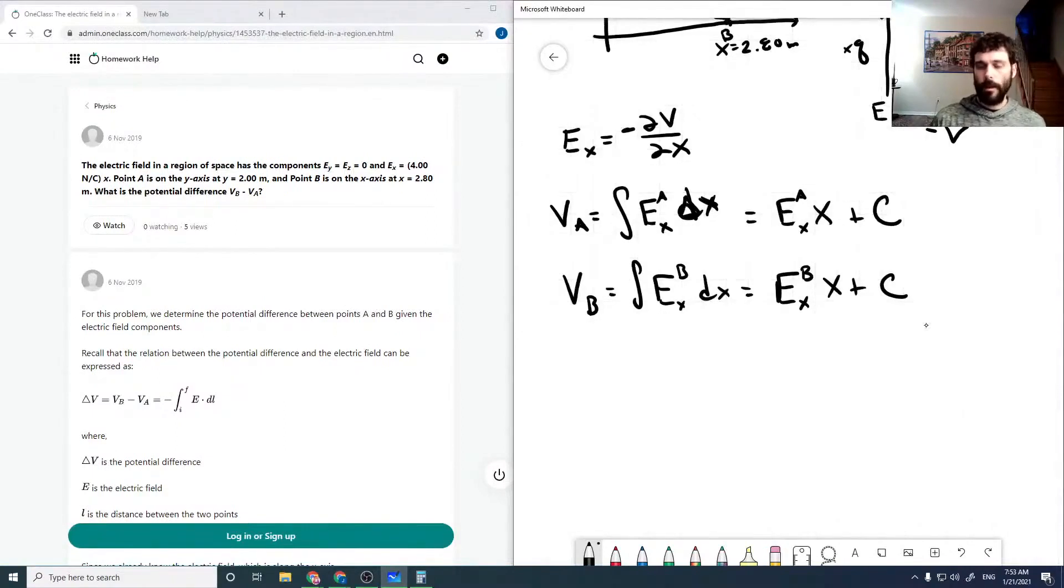Now, the electric field was a constant, right? So our E_X_A was equal to our E_X_B, which is equal to this 4.0 newtons per coulomb. Our X_A is 0. Our X_B is 2.80 meters.